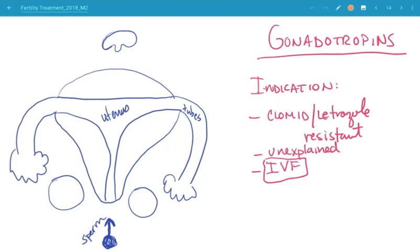The indication for gonadotropins is usually people who are Clomid or Letrozole resistant, people who have unexplained infertility where maybe IVF is not an option or who would like to try something more aggressive before they move on to IVF. But more commonly, gonadotropins are the staple treatment of choice for super ovulation or so-called controlled ovarian hyperstimulation.